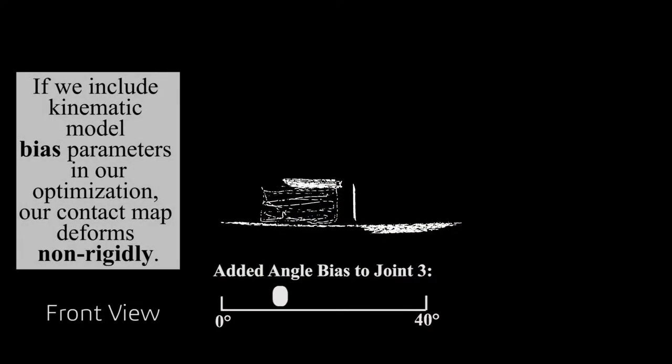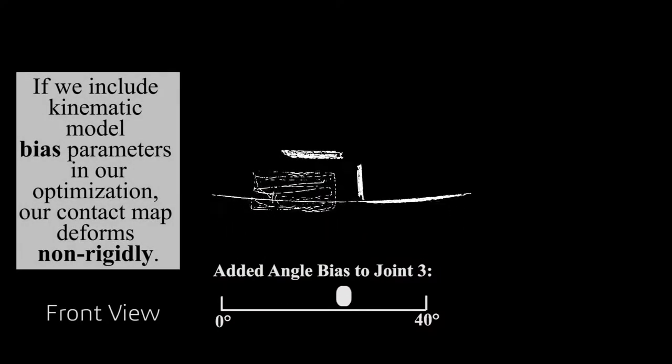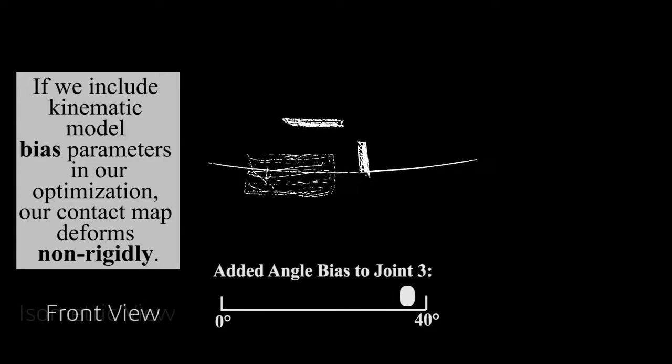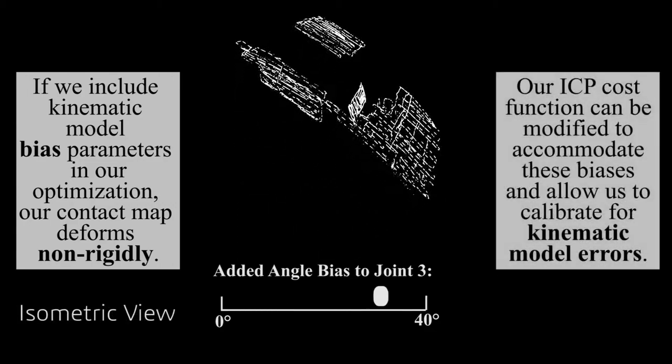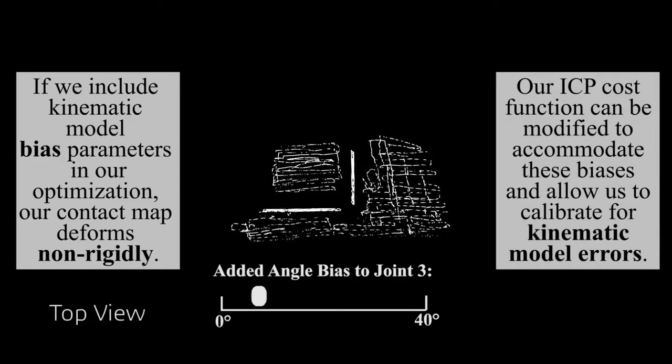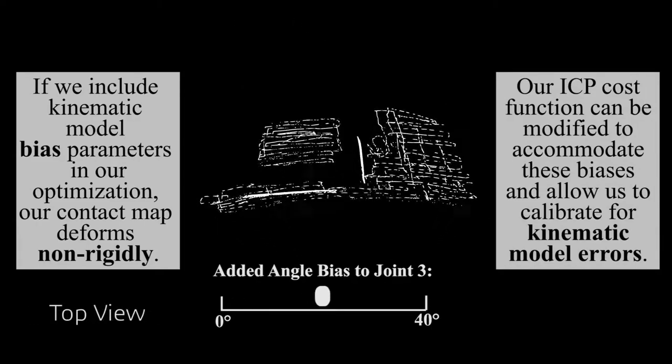If we include kinematic model bias parameters in our optimization, our contact map deforms non-rigidly. Our ICP cost function can be modified to accommodate these biases and allow us to calibrate for kinematic model errors.